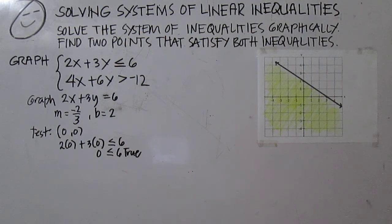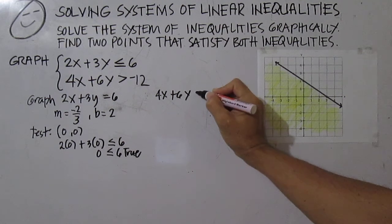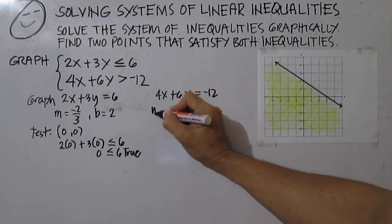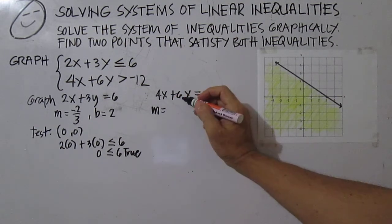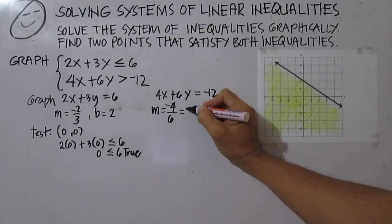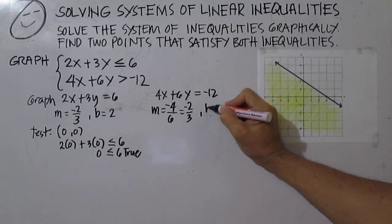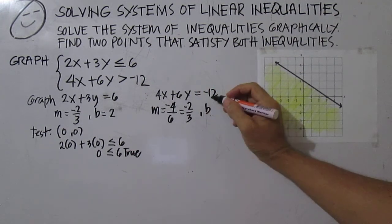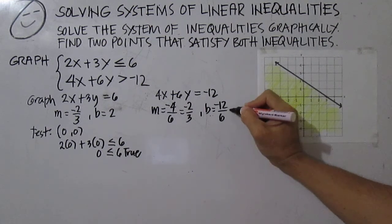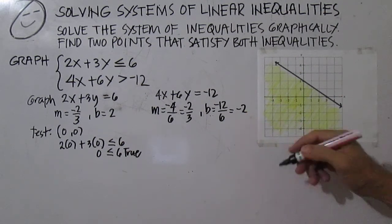Graph 4x plus 6y equals negative 12. The slope here is the opposite of a over b: negative 4 over 6, which equals negative 2 over 3. The y-intercept is c over b: negative 12 over 6 is negative 2.